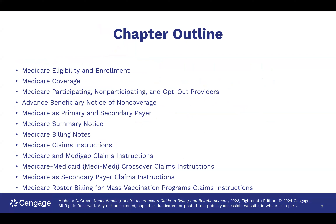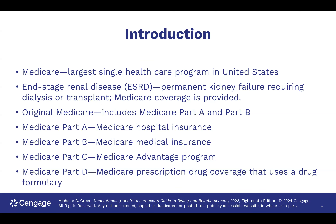These are some of the things we'll be talking about: Medicare eligibility, what's covered, all the different types, Medicare participating, non-participating, paying and opt-out providers, billing notes, claims, Medigap insurance, and the mass vaccination program, which is heavily in the news. Medicare is, of course, the largest single healthcare program in the United States, which makes sense because CMS is the largest provider of healthcare services in the United States.